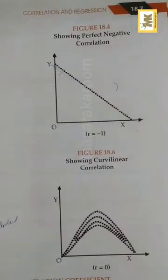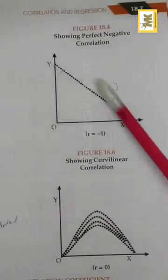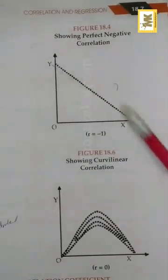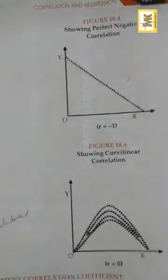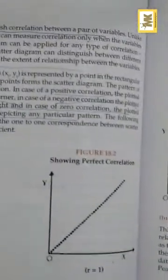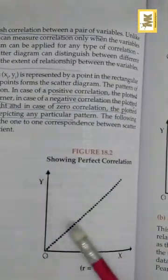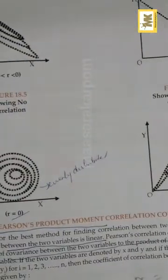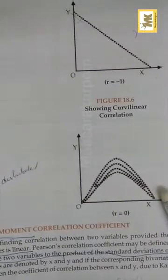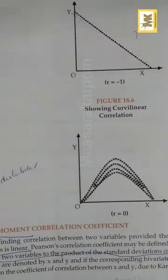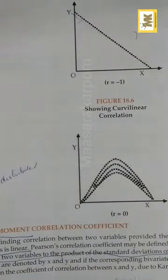Linear relationship — the points form a straight line, it can be negative or positive. Or it can be curvilinear like a curve — positive or negative. This is curvilinear. So the scatter diagram measures both linear and curvilinear.